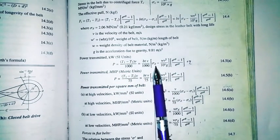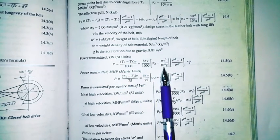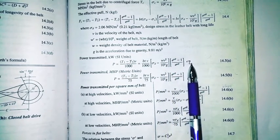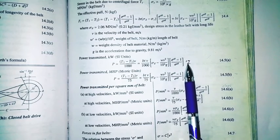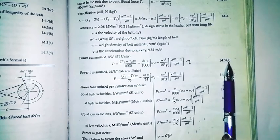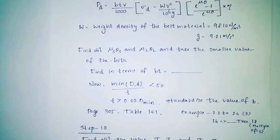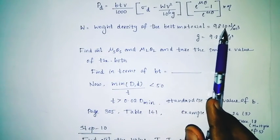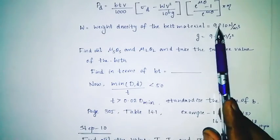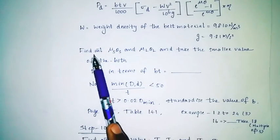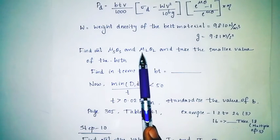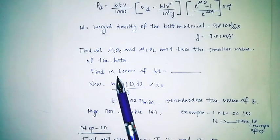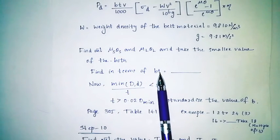Sorry — that is not eta, it is into eta. The weight density is 9810 newton per meter cube. Gn is 9.81 meter per second squared. Find out ν_s, θ_s, and ν_l, θ_l, and take the smaller value of both. Find in terms of bt.